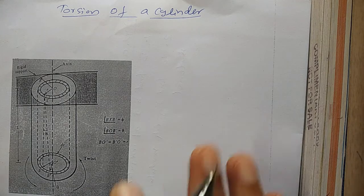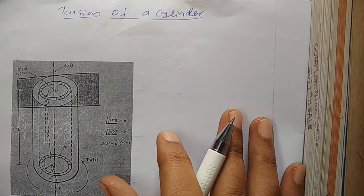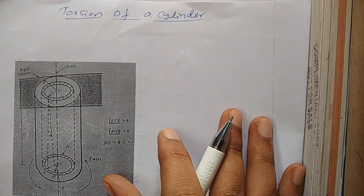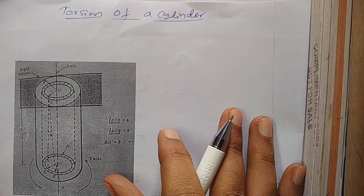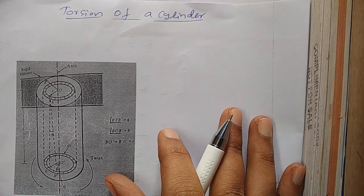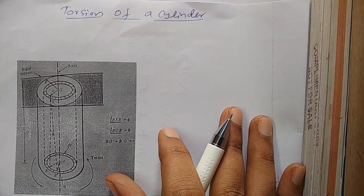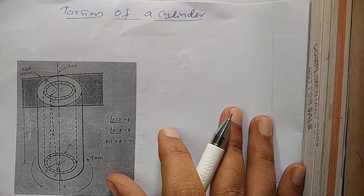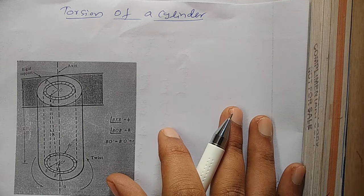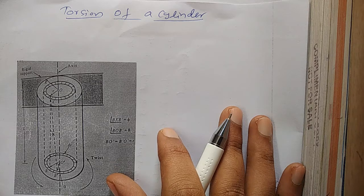Dear students, in this video I am going to discuss about torsion of a cylinder. Torsion means twist. A long body which is twisted around its length as an axis is said to be under torsion.